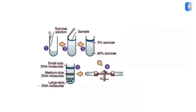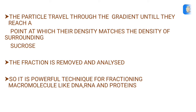The particles travel along the gradient until their density reaches a point corresponding to the density of the surrounding sucrose. This means the sample's most dense particles lie at the bottom and the least dense particles of the sample lie at the top. The particles travel through the gradient until they reach a point at which their density matches the density of the surrounding sucrose. Then this fraction is removed and analyzed.